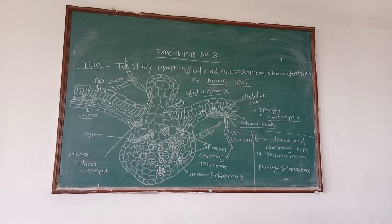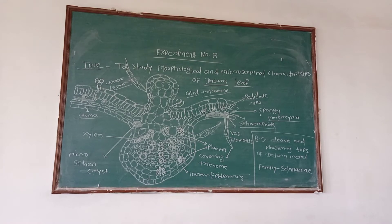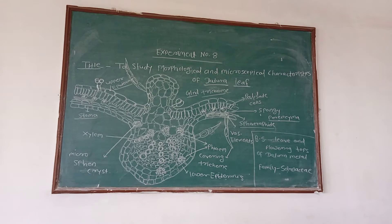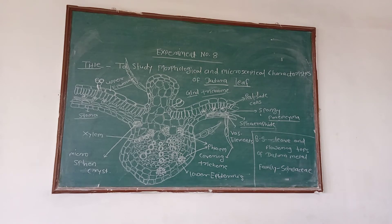Good morning everyone. Here we start our new experiment, Experiment number 8. The title for this experiment is to study the morphological and microscopical characteristics of the Datura leaf. We have prior concepts from last practicals: section cutting, how to cut the section, how to stain the slide, and how to mount and observe the transverse section of the crude drug.